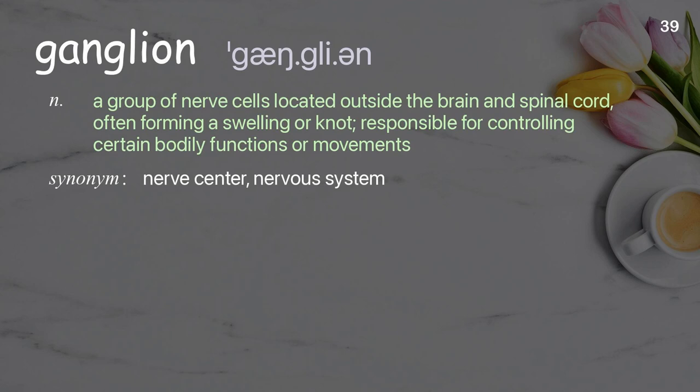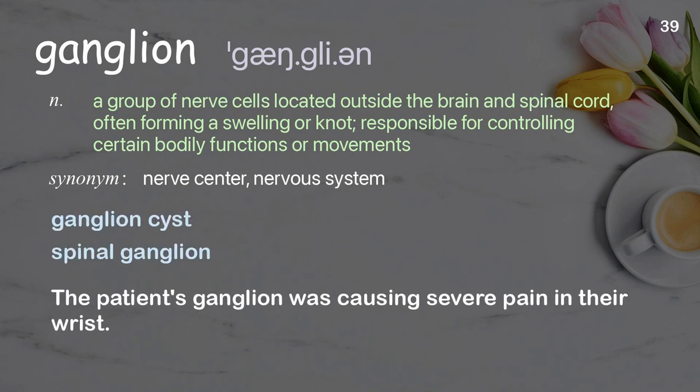Ganglion: a group of nerve cells located outside the brain and spinal cord, often forming a swelling or knot, responsible for controlling certain bodily functions or movements. Examples: ganglion cyst; spinal ganglion. The patient's ganglion was causing severe pain in their wrist.